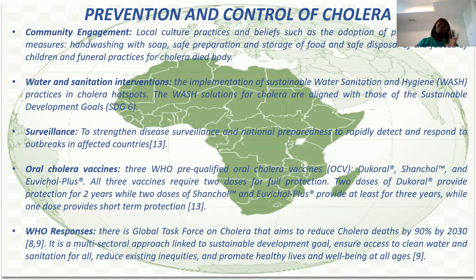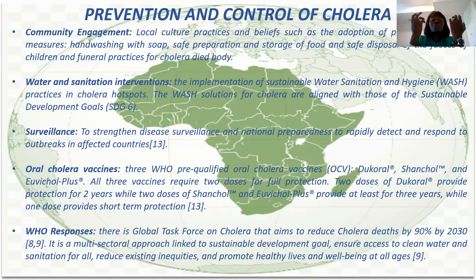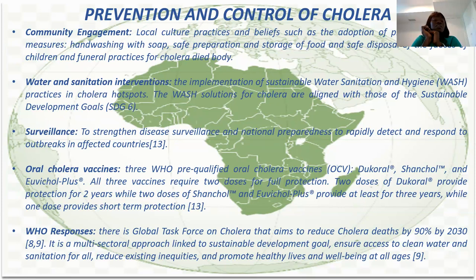There are many prevention and control strategies for cholera. One is community engagement, which involves cultural practices like handwashing, safe preparation and storage of food, and proper disposal of children's feces. Another intervention is water and sanitation intervention — WASH, which stands for Water, Sanitation, and Hygiene. This is also within the Sustainable Development Goals that have been outlined.